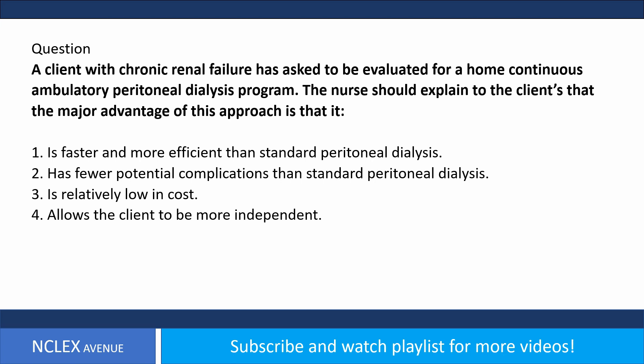A client with chronic renal failure has asked to be evaluated for a home continuous ambulatory peritoneal dialysis (CAPD) program. The nurse should explain that the major advantage of this approach is that it: one, is faster and more efficient than standard peritoneal dialysis; two, has fewer potential complications than standard peritoneal dialysis; three, is relatively low in cost; four, allows the client to be more independent.